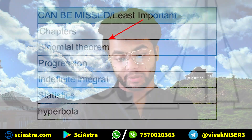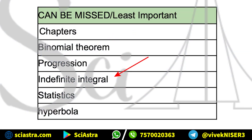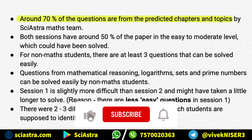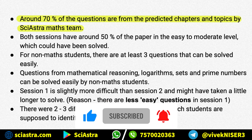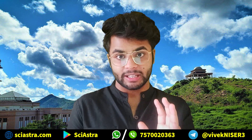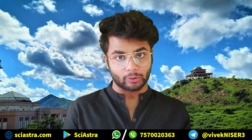Chapters that can be missed include binomial theorem, progressions, indefinite integral, statistics, and hyperbola. Now, around 70% of the questions in the 2021 exam came exactly as the Sayestra math team had predicted. Both sessions had about 50% of the paper at easy to moderate level, and a lot of these questions could have been easily solved if you had followed our important chapters.